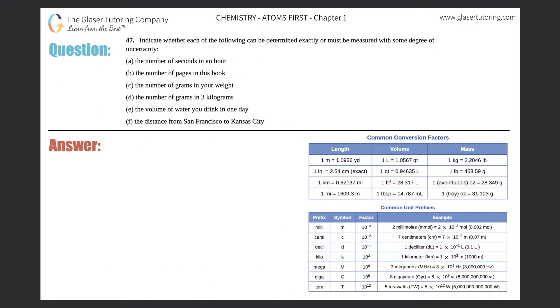Number 47: Indicate whether each of the following can be determined exactly or must be measured with some degree of uncertainty. I see that we got a through f here, so a, b, c, d, e, and f. We went more in depth in the last question about whether you can determine something exactly or with a degree of uncertainty, so if you need the full explanation, go check number 46 out.